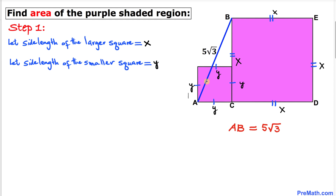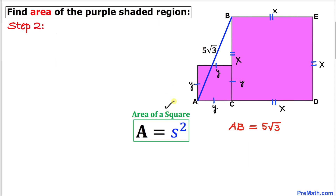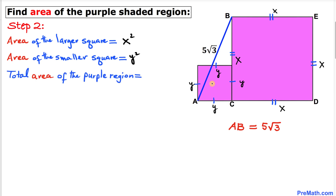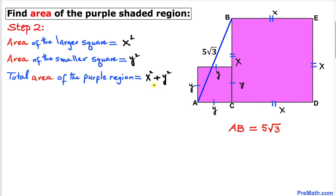Here's our next step. Let's recall the area of a square formula: area is always equal to s squared, where s represents the side length of the square. Therefore, the area of this larger square is x squared, and the area of this smaller square is y squared. So the total area of this purple region is going to be x squared plus y squared.